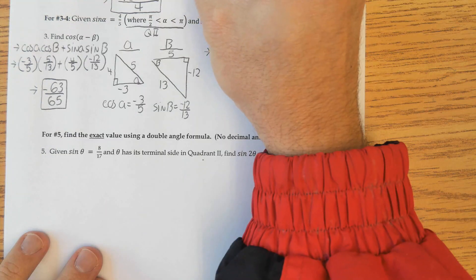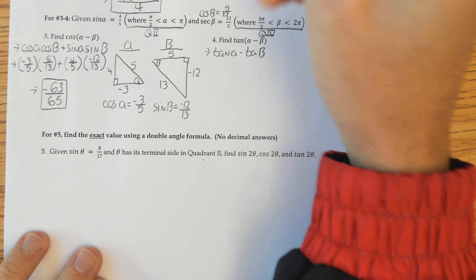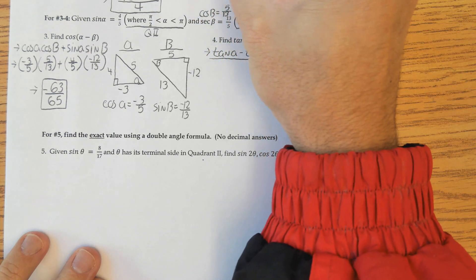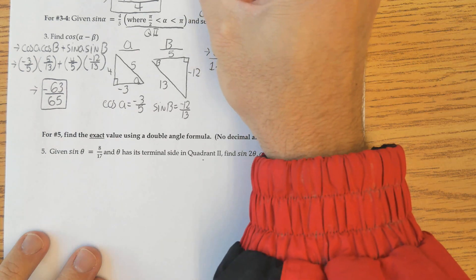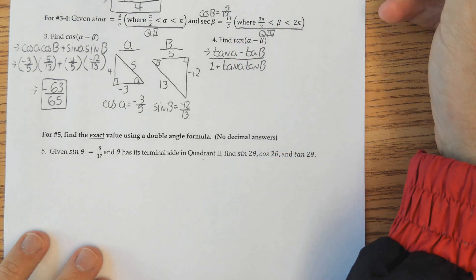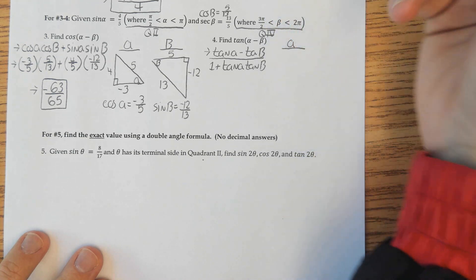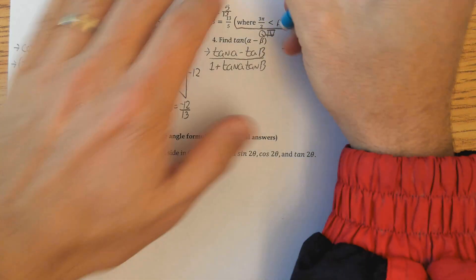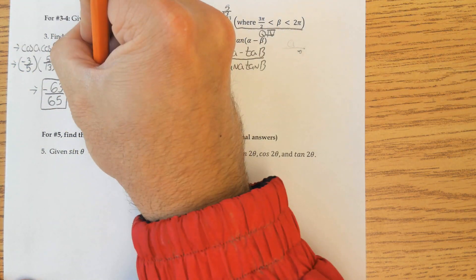Now we want to do tan(A minus B). Recall that formula: it is tan A minus tan big B, all over 1 plus tan A times tan big B. I need to do two triangles again, but actually we already drew them, so let's just find tangent for little a.